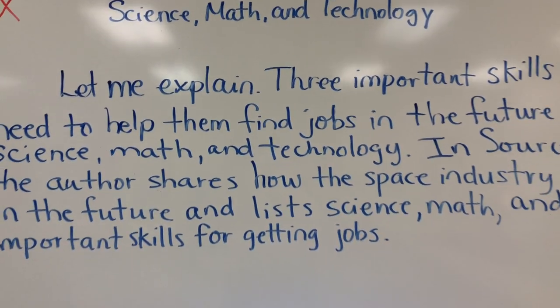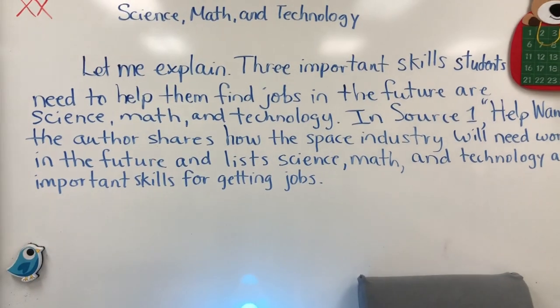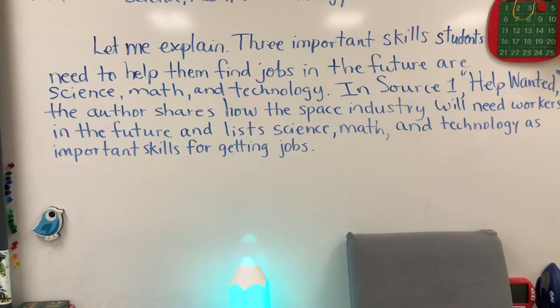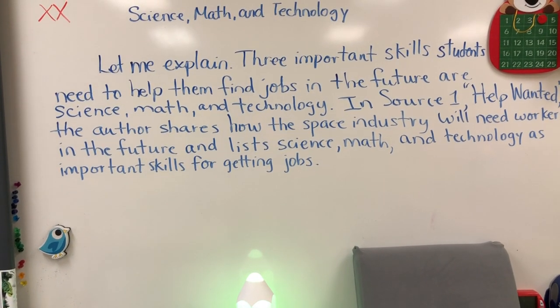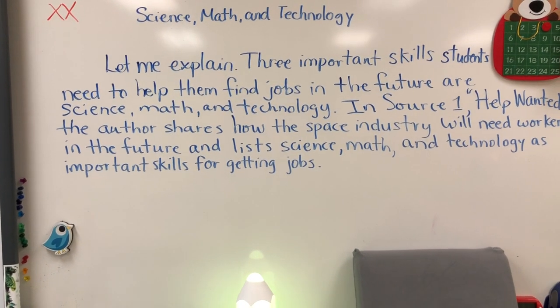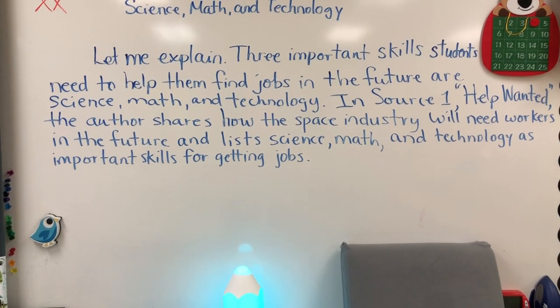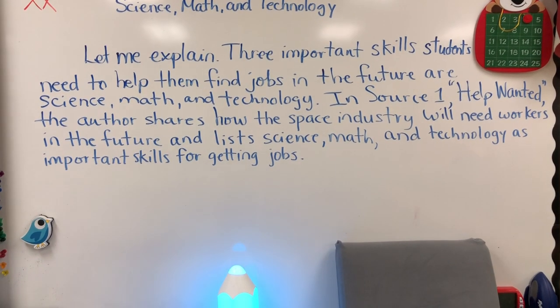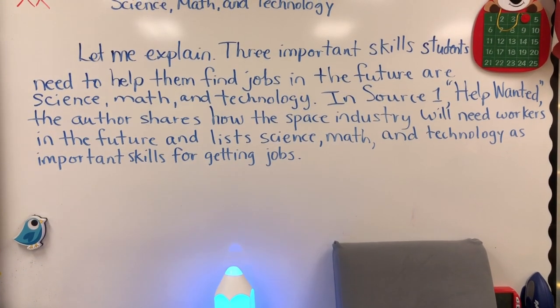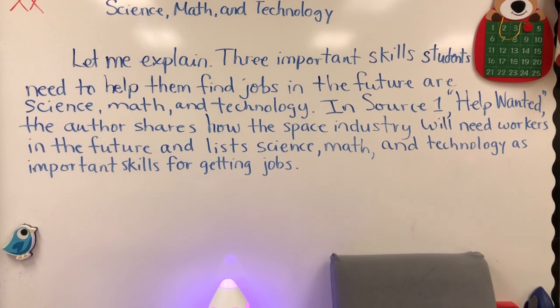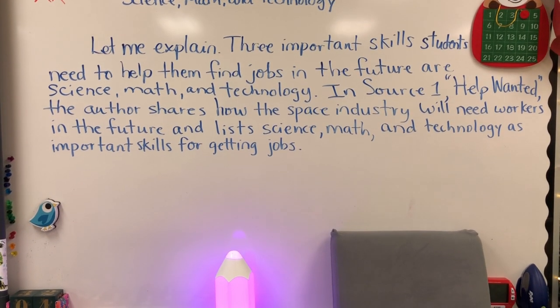This is the paragraph I started on the board: 'Three important skills students need to help them find jobs in the future are science, math, and technology. In source one, the author shares how the space industry will need workers in the future and lists science, math, and technology as important skills for getting jobs.' I will go ahead and elaborate on those three skills and why they are important for future jobs. I hope we can finish this essay soon so I can start on expository essay writing before we go on winter break.